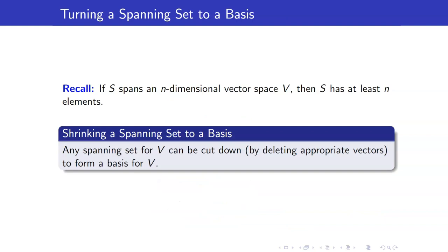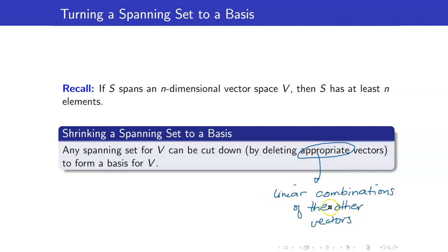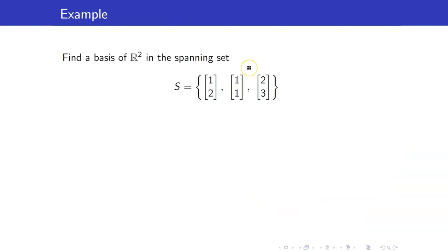That is actually a theorem. For any spanning set for V, we can always cut it down by deleting appropriate vectors to form a basis for V. When I say I want to delete appropriate vectors, these are the redundant vectors in your spanning set — that means these vectors are just linear combinations of the other vectors. Hence, if you delete those vectors which are linear combinations of the other vectors, the resulting set will still span your vector space.